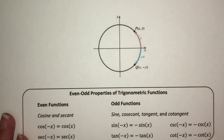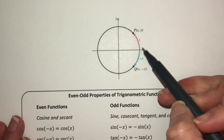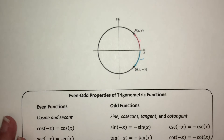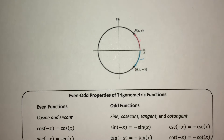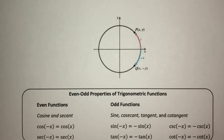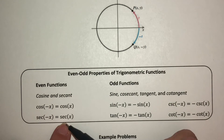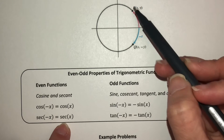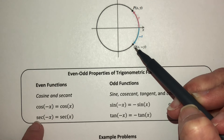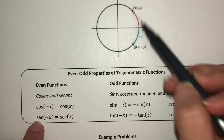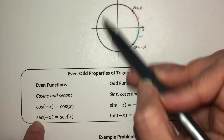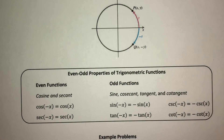Now let's talk about the relationship between a positive t value and a negative t value. When graphing trig functions it becomes useful to know whether a function is even or odd — that is, how plugging in a negative value changes the answer. Even functions absorb the negative: cosine of negative x equals cosine of x. Cosine and secant are based on x-coordinates, which are positive in both symmetric points on the unit circle, so the value doesn't change.